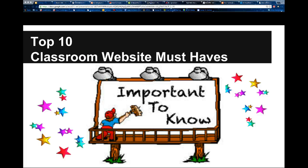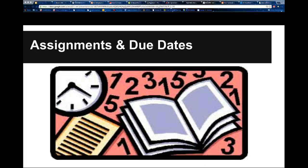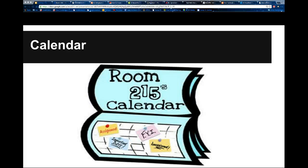Hopefully by now you're convinced you should have a website and we went over some basic design principles. So what exactly should be included on your website? Assuming your audience is going to be students and their families, here are the top 10 elements you might want to include. Assignments and due dates: when parents are polled, assignments and due dates turns out to be the number one reason why families go to teacher websites — they want to be able to access assignments and due dates. This is also a huge reason why it's very important to keep your site up to date. A calendar is also very helpful — your website should be a one-stop shop so families don't have to link out to find information.